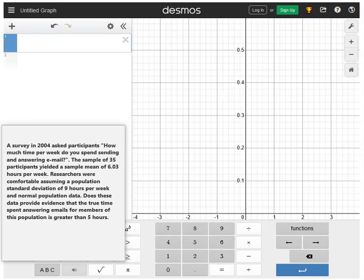Researchers were comfortable assuming that the population standard deviation of 9 hours per week with the normal population data. So if they're going to assume a value for the population standard deviation, that's going to be sigma in our Z-statistic formula. And then that last sentence is really giving us the motivation. Does the data provide evidence that the true time spent answering emails for members of this population is greater than 5 hours? So our alternative looks like a greater than alternative, and the null value is going to be 5 hours. That's the mu naught in the formula for Z-statistic. So knowing also that the alternative has this greater than direction, I know my p-value is going to be in that greater than or right tail.